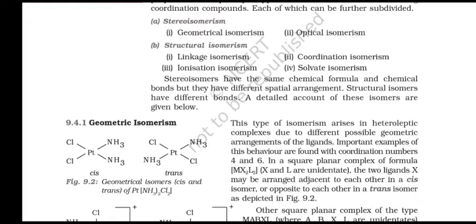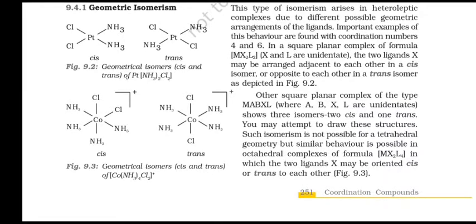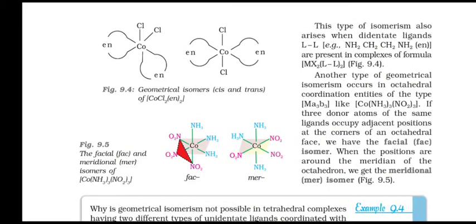Geometrical isomerism arises in heteroleptic complexes due to different possible geometric arrangements of the ligands. In a square planar complex of formula MX2L2, the two ligands X may be arranged adjacent to each other (cis isomer) or opposite to each other (trans isomer). Square planar complexes of type MABXL show three isomers — two cis and one trans. Such isomerism is not possible for tetrahedral geometry, but similar behavior occurs in octahedral complexes of formula MX2L4.